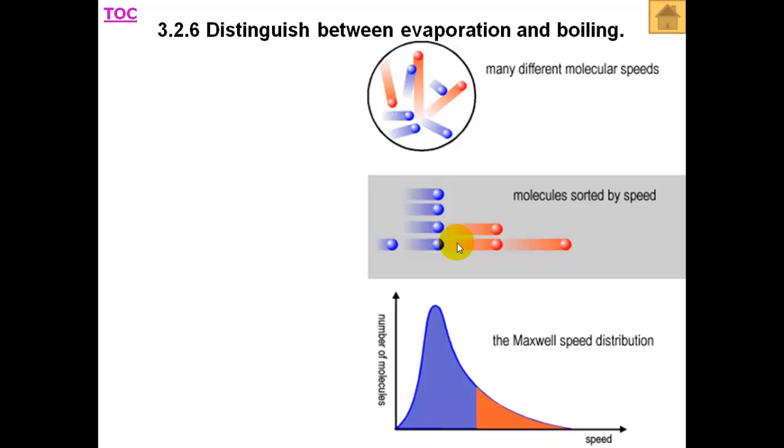Here we have a graph showing the distribution of the speeds of the different particles. We have very few moving at a very high speed, more at an intermediate speed, a great number at a fairly slow speed, and very few at a very slow speed. We have a distribution which looks like this - the Maxwell speed distribution.